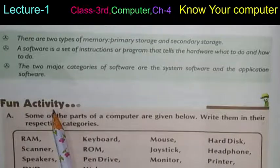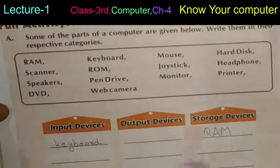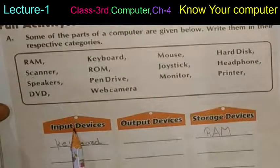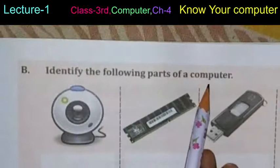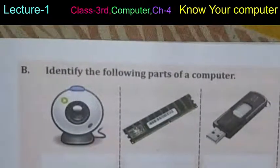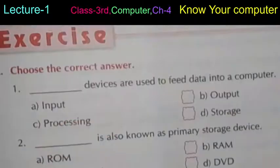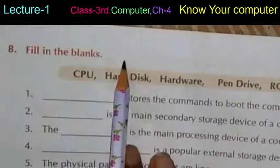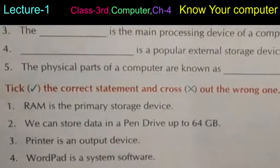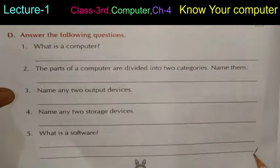This is your homework — fun activities: choose devices from the table into input, output, and storage categories; identify the parts of a computer and write their names; choose the correct answer; fill in the blanks; true and false; and question-answer. Do your homework yourself. Goodbye!